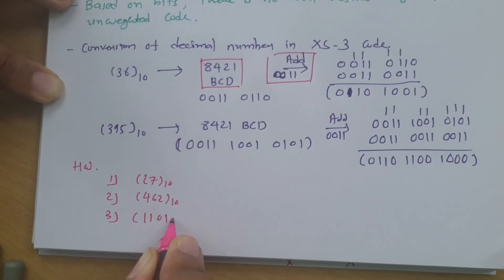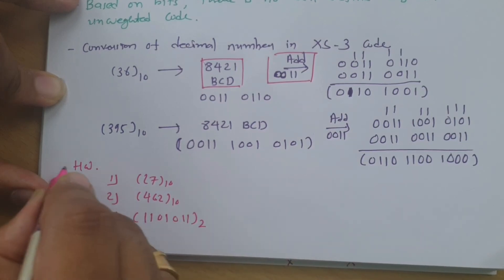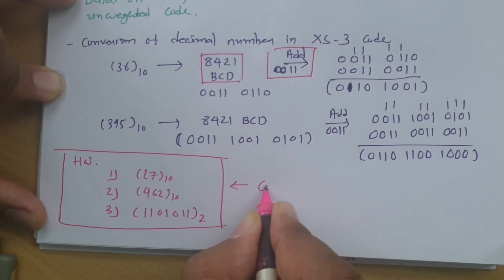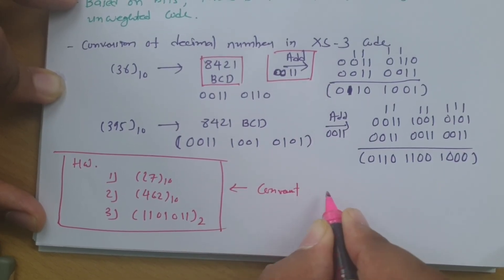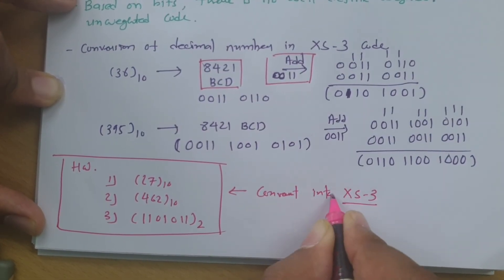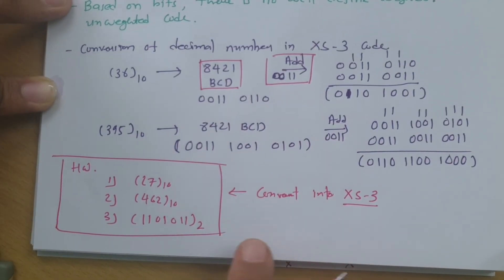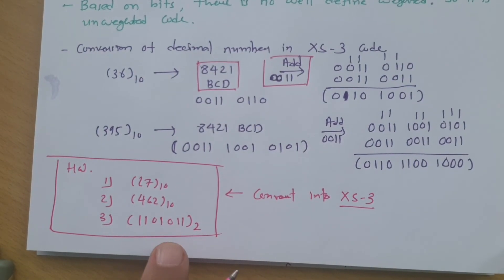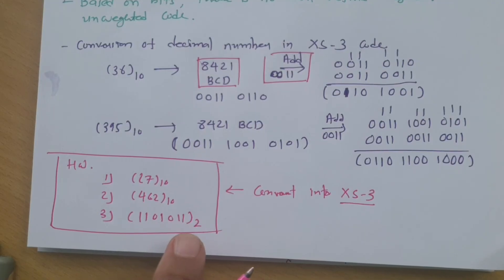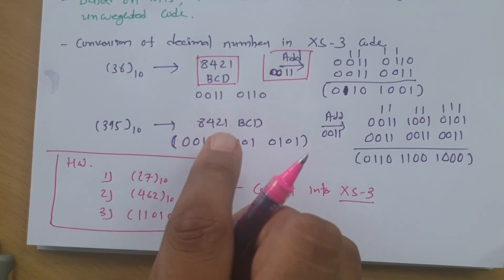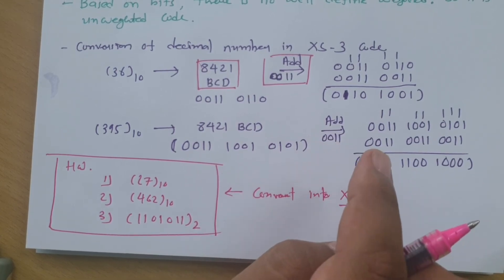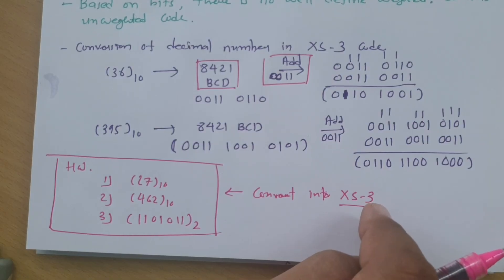Some homework questions are provided — convert the given numbers into Excess-3 code. For the last question, which is given in binary, first convert it to decimal, then to 8421 BCD, and then add 0011 to each digit to find the Excess-3 code. Please write your answers in the comments.